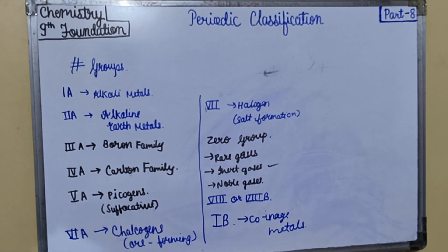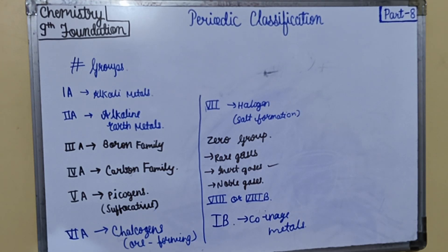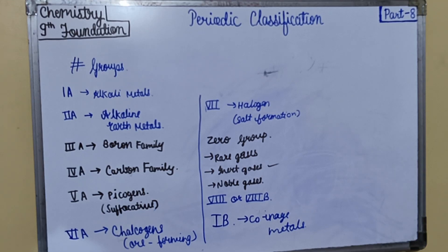Now there is another topic: the significance of period number and group number. We will learn that in Part 9 of this chapter, along with the significance of period number and group number, and then we will see the utility of the periodic table.